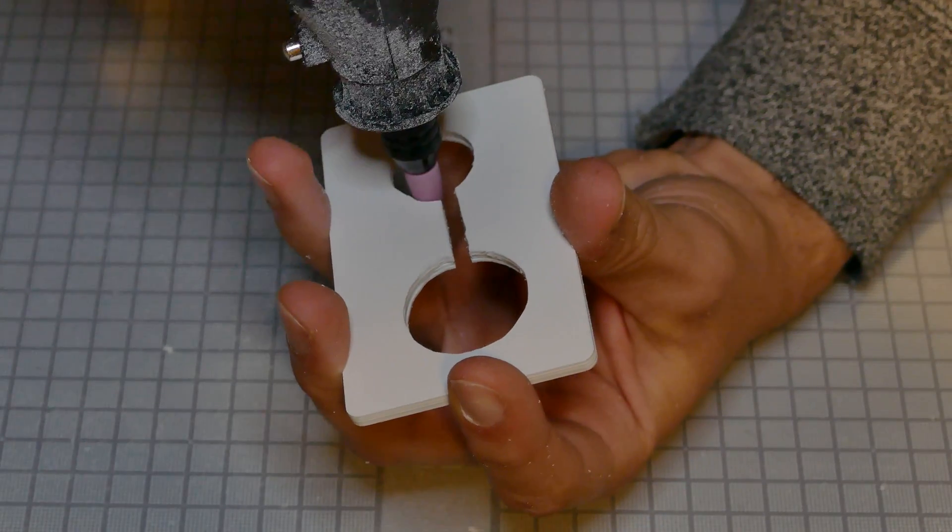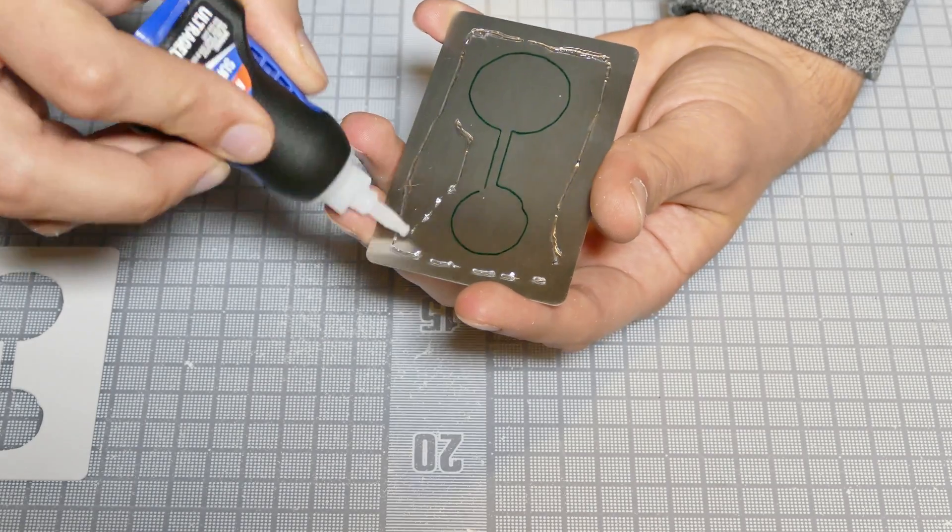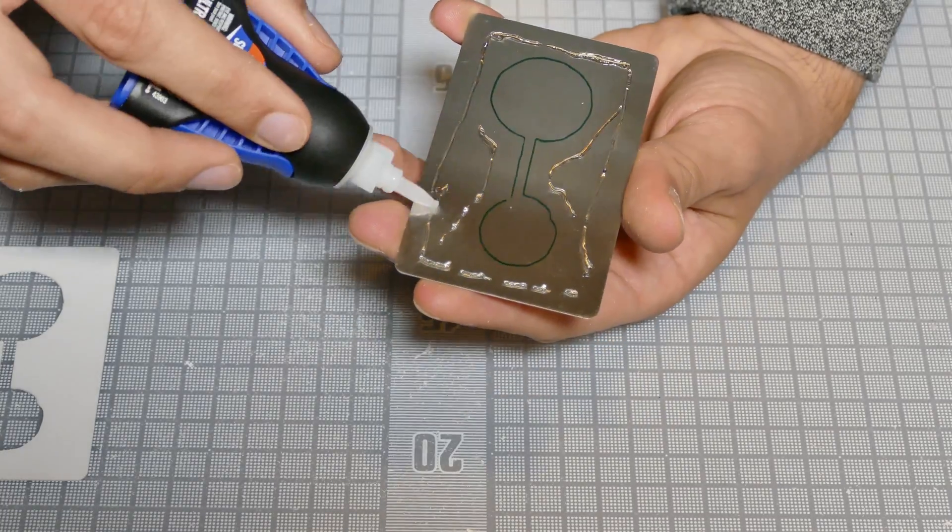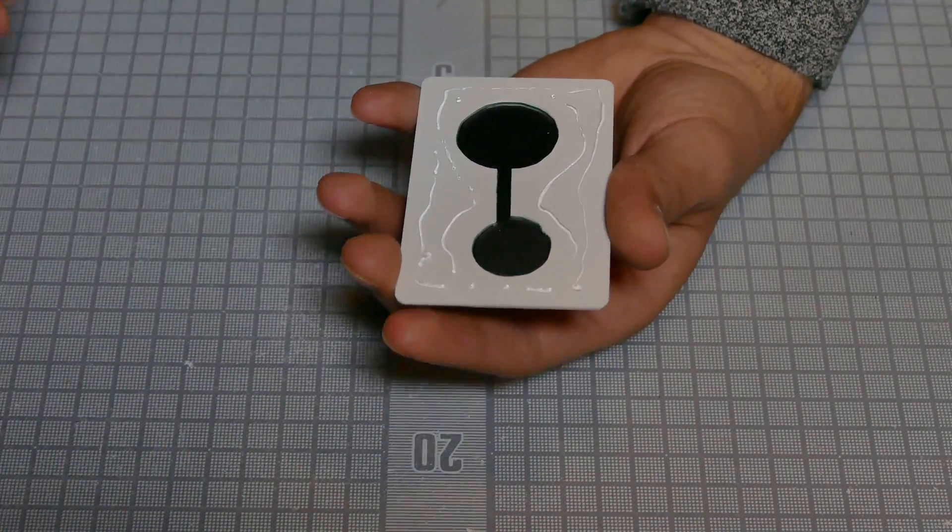Once I trimmed the side, I proceeded to superglue the cards together, but before that, I traced down the cutouts, and one by one, I glued the cards on.